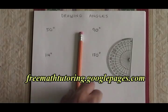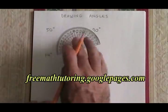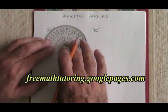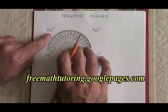Let's practice drawing angles. We have to be familiar with our protractor to do this. The first angle I'm asked to draw is 50 degrees.